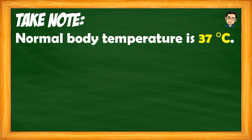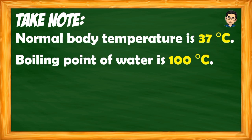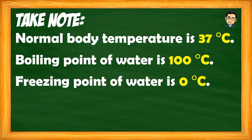Our normal body temperature is 37 degrees Celsius. If it reaches 38, 39, or especially 40 degrees, that is already dangerous — we have a fever. If below 37, our body is cold. The boiling point of water is 100 degrees Celsius — when the kettle whistles, the water has reached its boiling point. The freezing point is zero degrees Celsius.